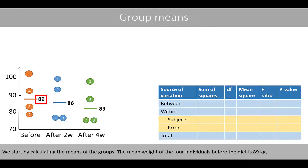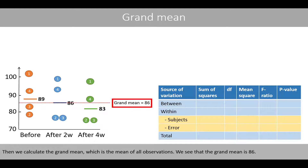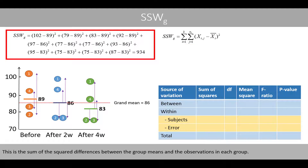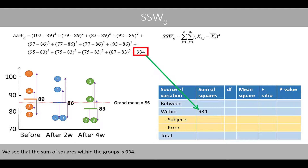We start to calculate the means of the groups. The mean weight of the four individuals before the diet is 89 kilos. After two weeks on the diet, the mean weight has been reduced to 86 kilos. Then we calculate the grand mean, which is the mean of all observations. We see that the grand mean is 86. We can now start to calculate the sum of squares within the groups, just as we did for the one-way ANOVA. This is the sum of the square differences between the group means and the observations in each group. For example, these calculations are based on the square distance between the mean weight before the diet and the corresponding weights of the four individuals. We see that the sum of squares within the groups is 934.